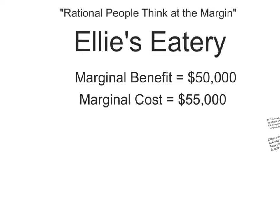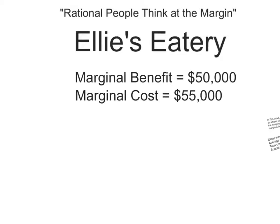She's also going to think about what is the marginal cost related to adding this second dining room. This is the additional cost just related to the second dining room. So let's say it costs more to prepare and cook the meals in the kitchen. She's got to maybe hire more cooks, maybe redesign the kitchen, hire more wait staff. These would be additional costs related to adding the second dining room.